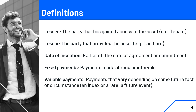The date of inception is the earlier of the date of the agreement or the commitment. Fixed payments are payments made at regular intervals. Variable payments are payments that vary depending on some future fact or circumstance — for example, payments tied to an index or a rate that is dependent on a future event.